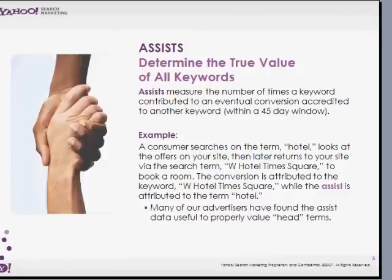A conversion is typically calculated on the advertiser's thank-you page. Something unique to Yahoo is a metric called ASSIS. ASSIS simply measures the number of times a keyword contributed to an eventual conversion credited to another keyword within a 45-day window. As an example, let's say I'm a visitor on Yahoo and I search for the word 'hotel,' click on the link, land on the advertiser's page, but decide not to purchase. Then an hour or a few days later, I search for 'W Hotel Times Square,' land on that same advertiser's page, and reserve a room. W Hotel Times Square gets credited with the conversion, and the 'hotel' term gets the ASSIS.